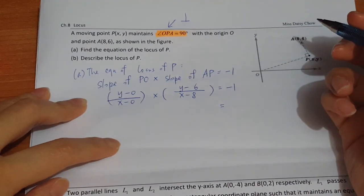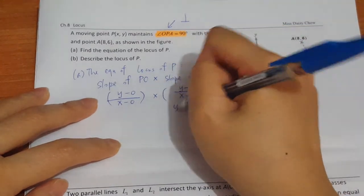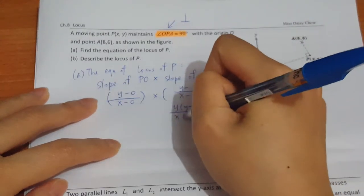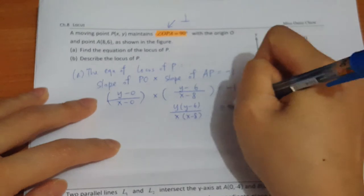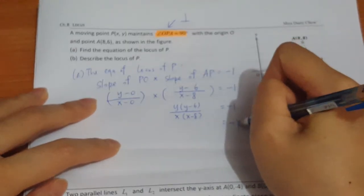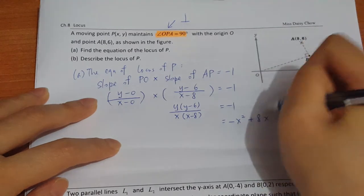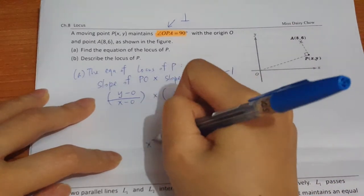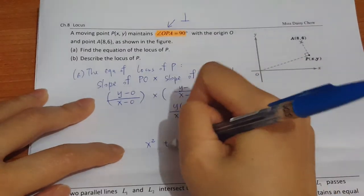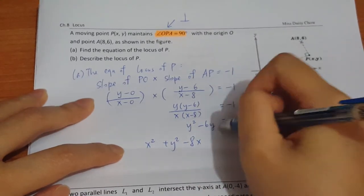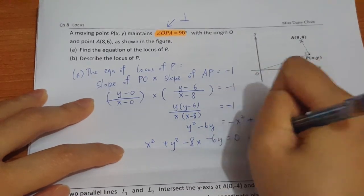So y times y minus 6 over x times x minus 8. I have to move it to the right-hand side, so it would be negative x squared plus 8x. Right-hand side would be y squared minus 6y. So I will have a circle: x squared plus y squared minus 8x minus 6y equals 0.